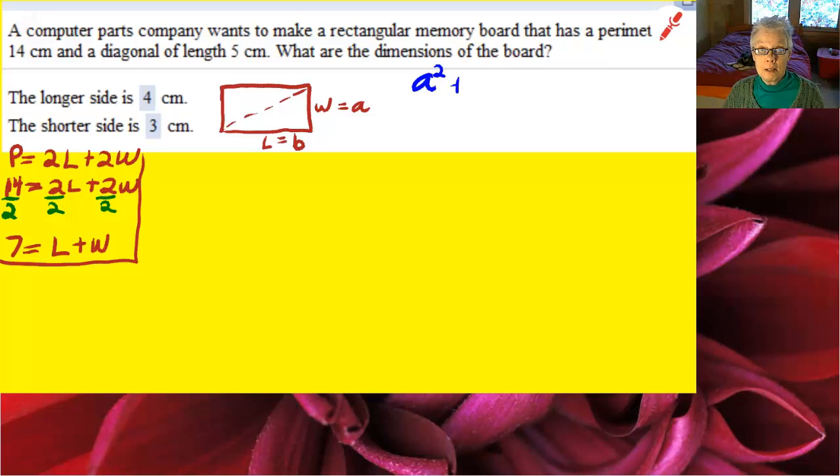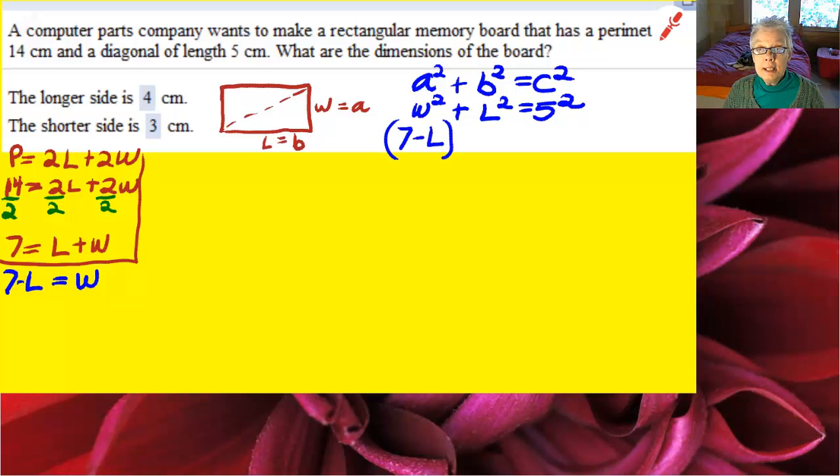Now there's another formula. We're dealing with a right triangle that has a diagonal. We're looking for the length of the sides. That means use A squared plus B squared equals C squared, also known as the Pythagorean theorem. But since W equals A and L equals B, I'll substitute W and L into the formula. Now I'm going to use the perimeter formula to solve for W and substitute that into W in the Pythagorean theorem.